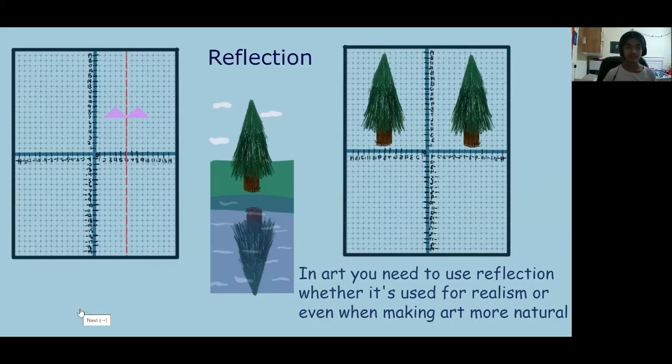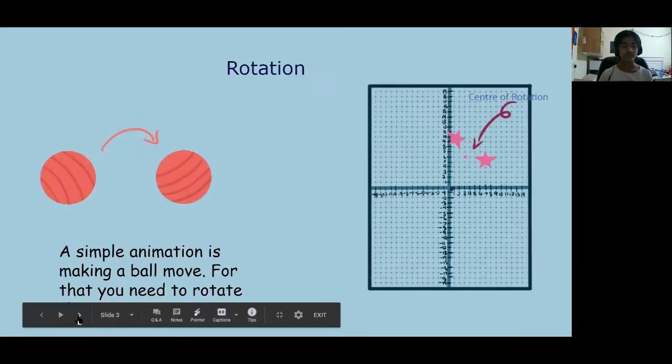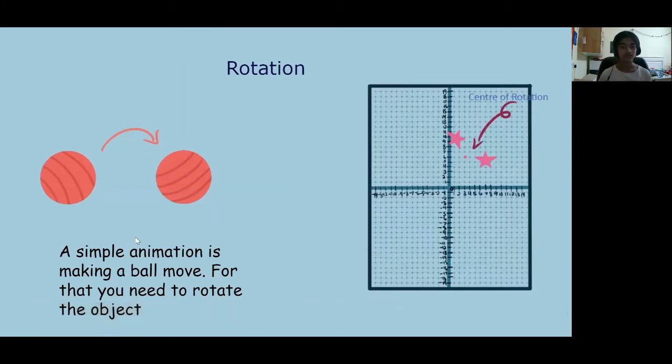Rotation. A simple animation is making a ball move. For that, you need to rotate the object. So if I were to make the ball move, I would put the center of rotation in the middle of the ball and have the object rotating.